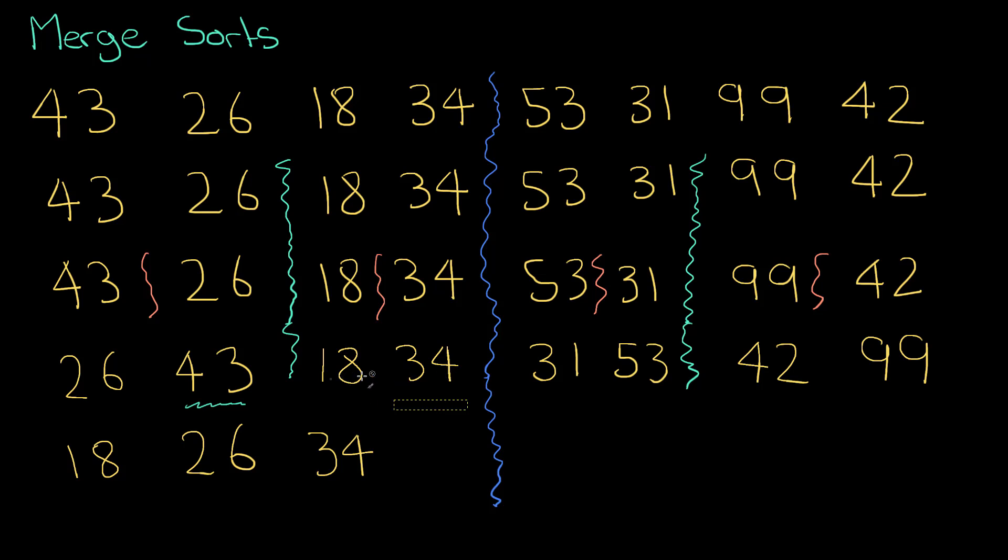I can get rid of that line now because I've used all the numbers in my sub list here so I know I've got 43 left over and I do exactly the same thing on the right hand side.